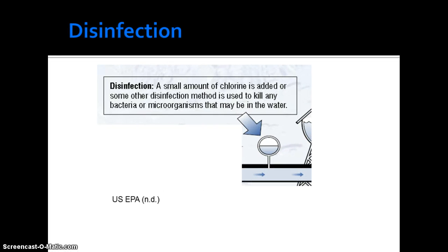In the disinfection stage, a small amount of chlorine is added, or some other disinfection method is used to kill any bacteria or microorganisms that may be in the water. (U.S. EPA, no date.) Disinfection targets biological concerns, and while chlorine disinfection is common, other possible mechanisms include ozone treatment, which is a strong oxidant, or ultraviolet (UV) light.